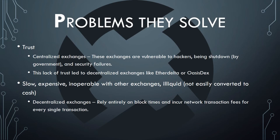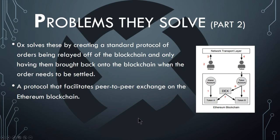Decentralized exchanges have issues because they're slow, expensive, inoperable with other exchanges, and illiquid — not easily convertible to cash. Decentralized exchanges rely entirely on block time and incur network transaction fees for every single transaction. Basically, 0x solved these problems by creating a standard protocol where orders are relayed off the blockchain and only brought back onto the blockchain when orders need to be settled. It's a protocol that facilitates peer-to-peer exchanges on the Ethereum blockchain.